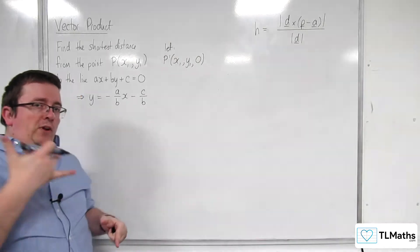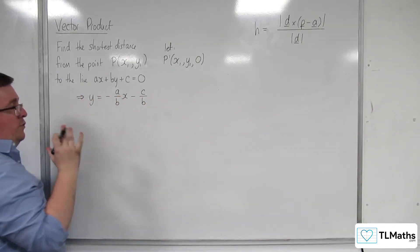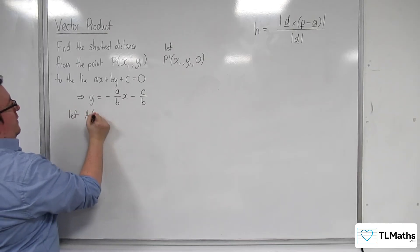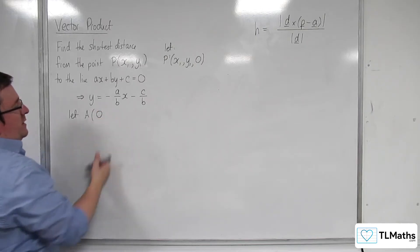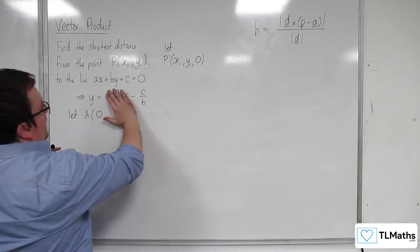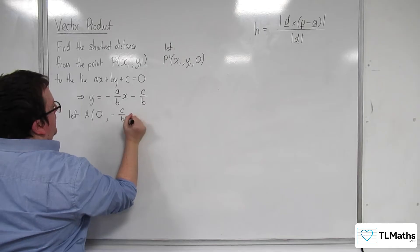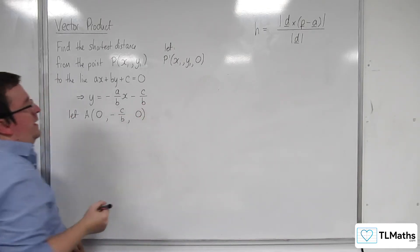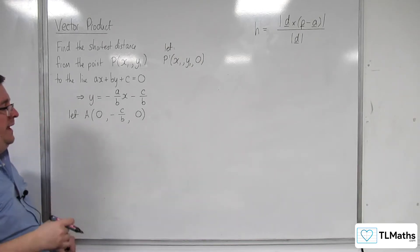We're going to choose a point on this line with 3D coordinates. So, we're going to let the point A have coordinates 0. I'm going to let x be 0. The consequence is that when x is 0, y will be minus c over b. And because it's just on the x, y grid, I'm going to put 0 as the z component. So here's my point A.